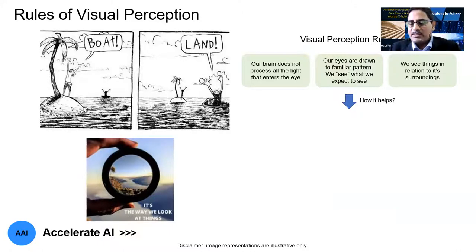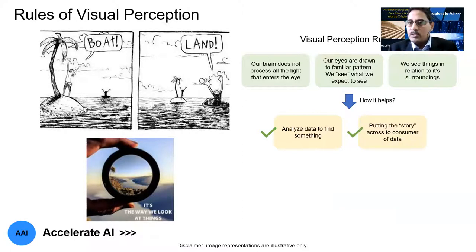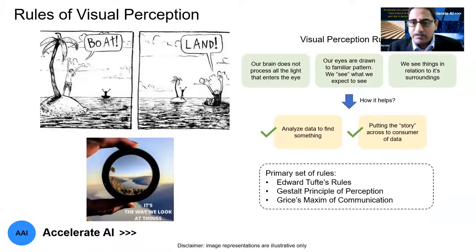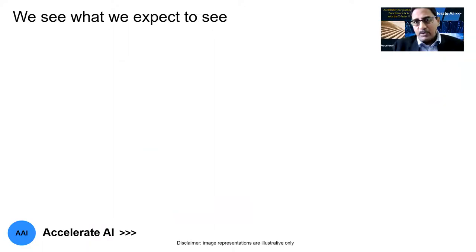How do these visual perception rules help us? The two key aspects are: first, analyzing the data to find something — it could be a pattern; and second, a kind of storytelling, putting the story across to your end user or those who are consuming the data. We will see some primary sets of rules. There are scientists — one prominent one is Edward Tufte, then there is also the Gestalt principle, then you have Price's maxim of communication, among various aspects. We will focus a lot on Edward Tufte's rules.